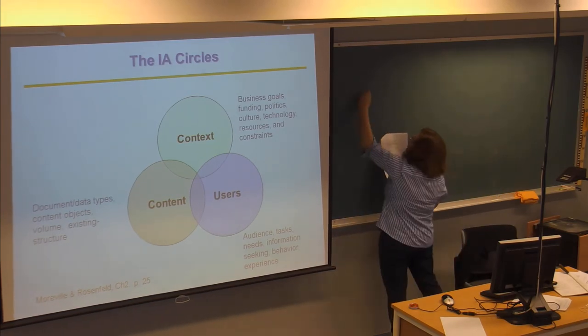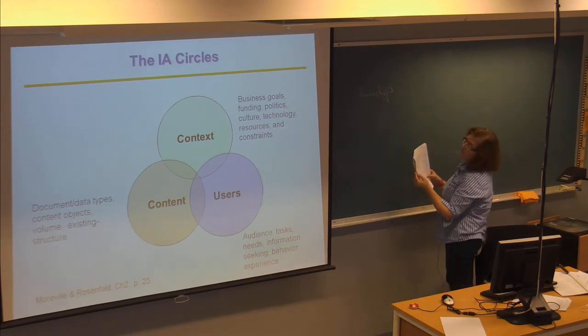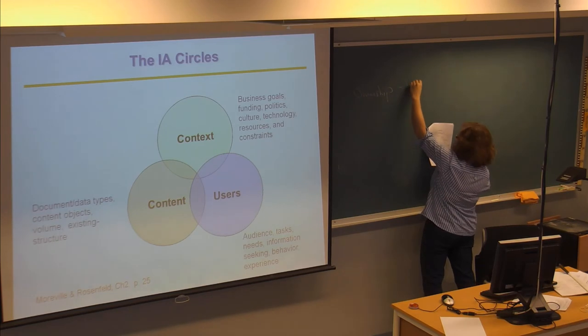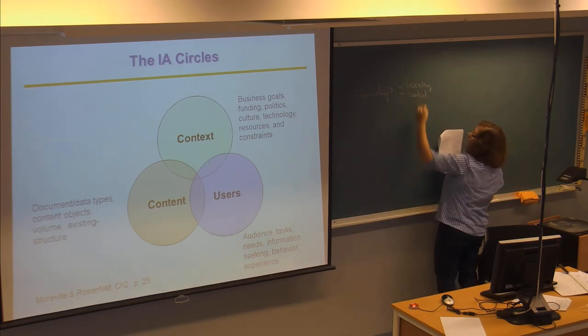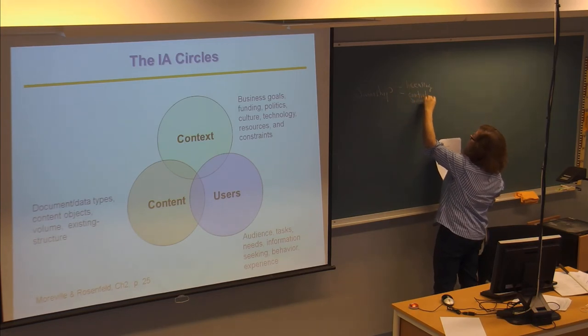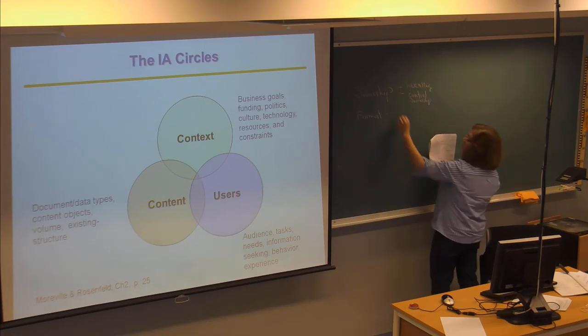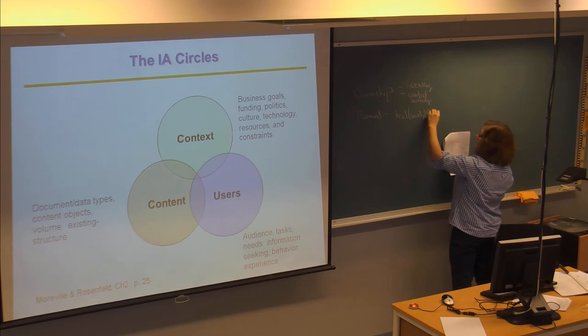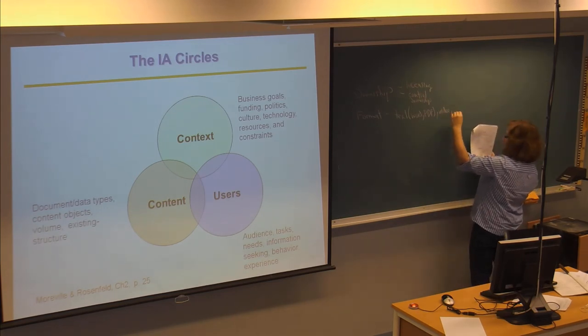One thing can be ownership. So, issues that are related to the user or the information content. And it could have issues like licensing. And control. Who controls the content or the information? Who owns it? Ownership control. And then the format. Is it text? Lots of different types of formats. Word, PDF, videos. Again, lots of formats, documents. And then it could be other things like database documents.